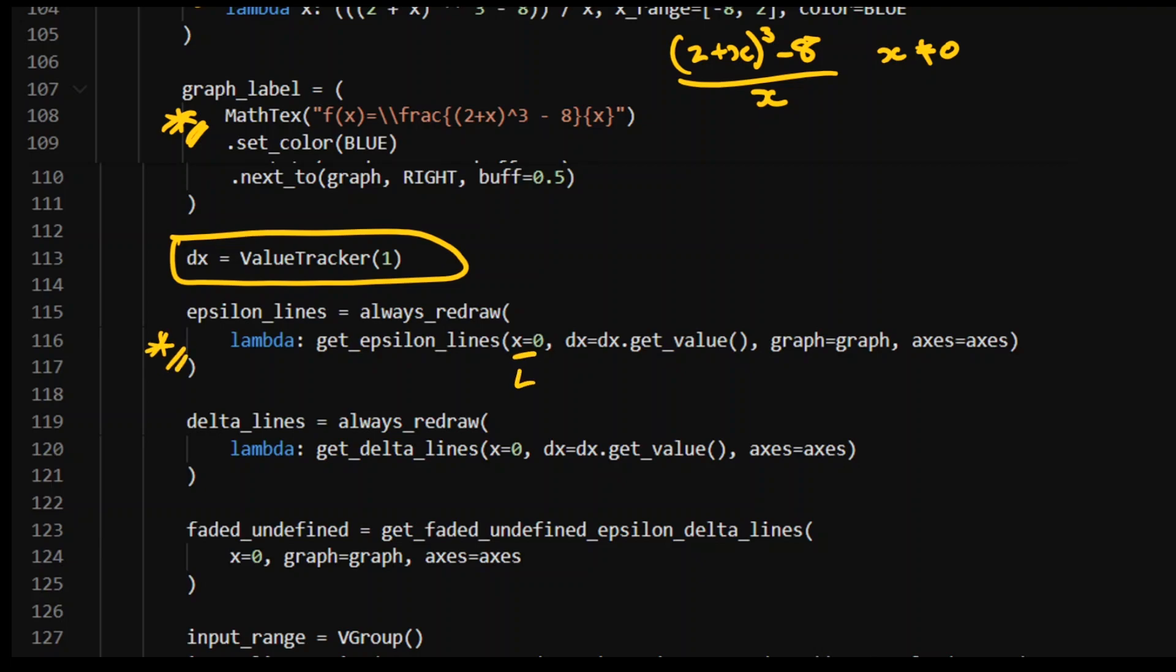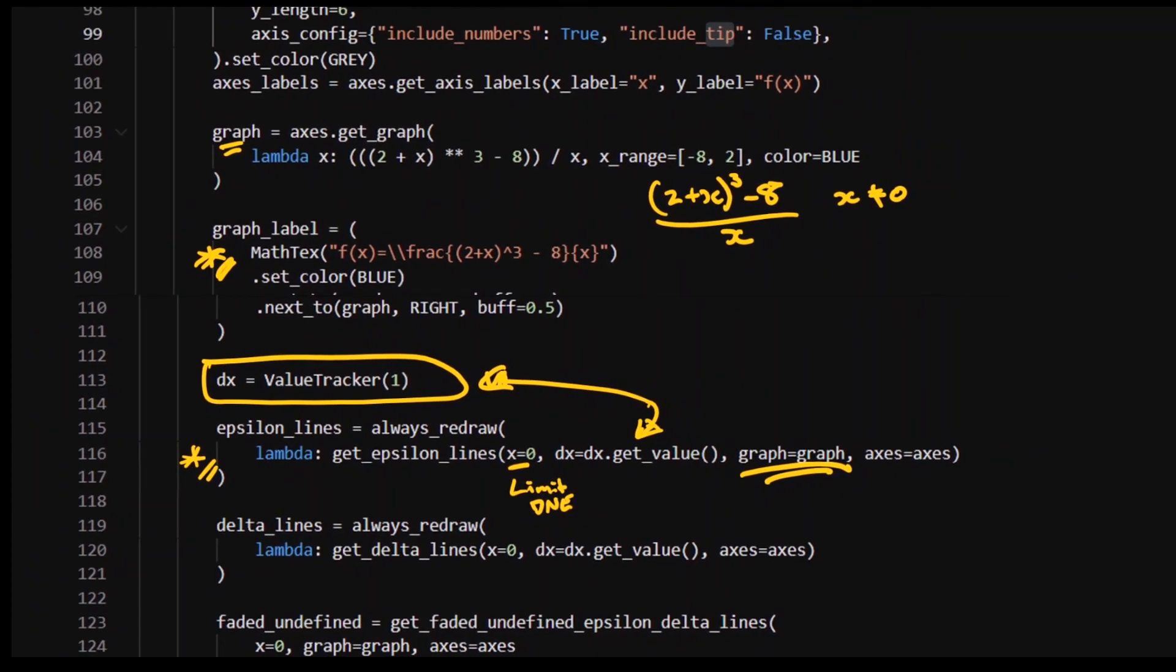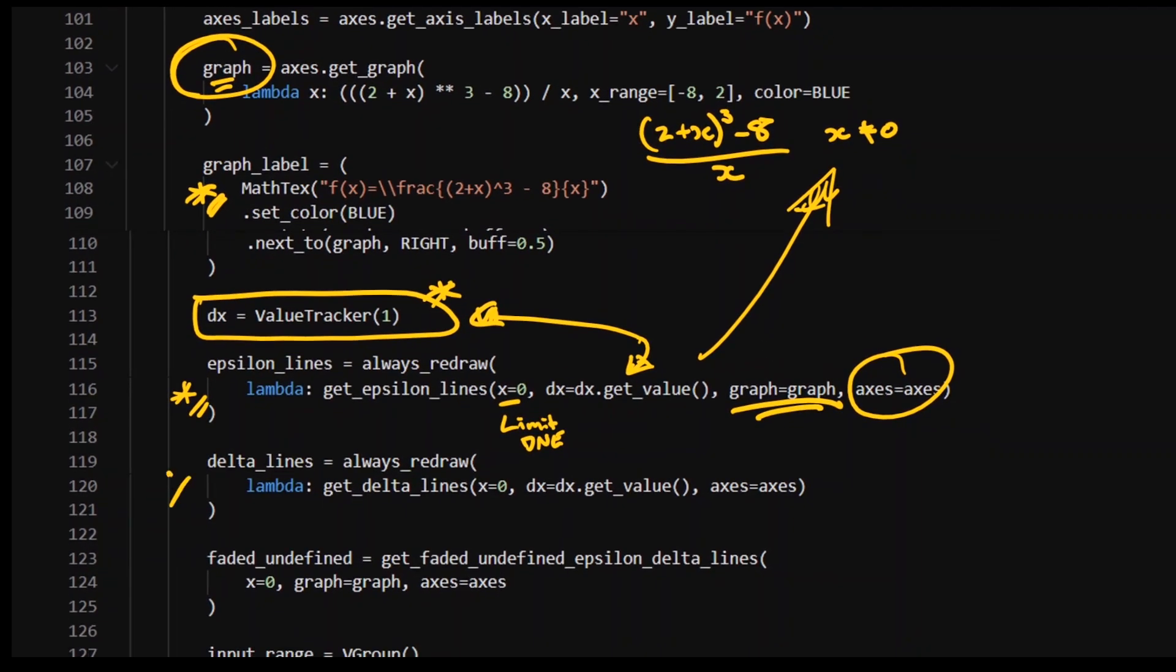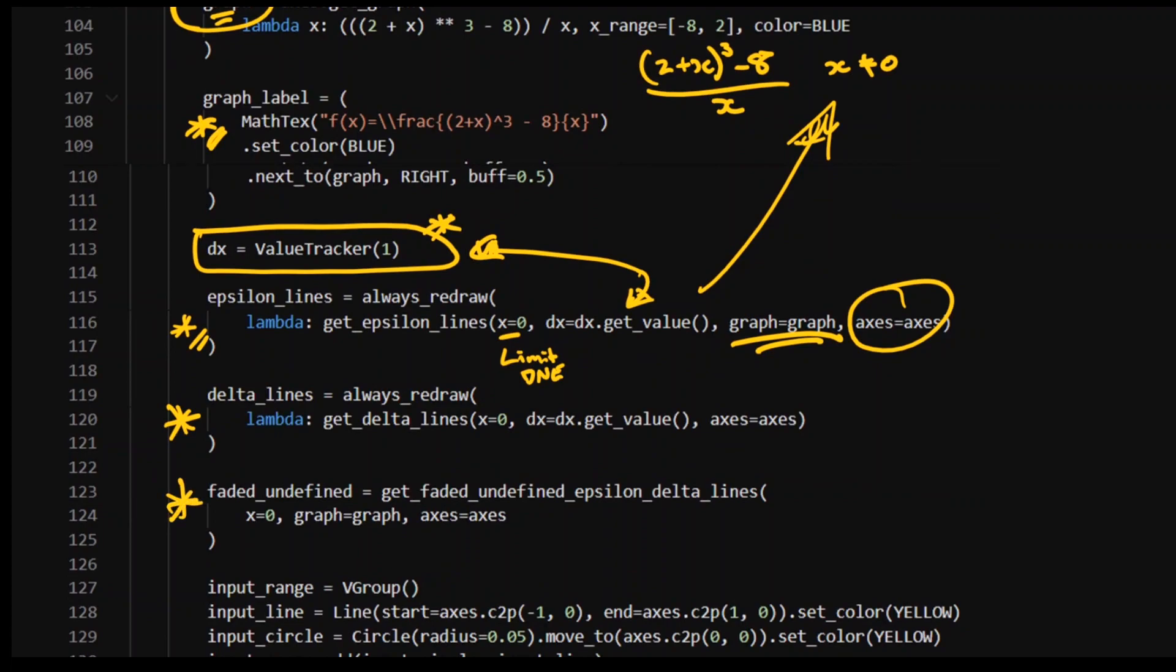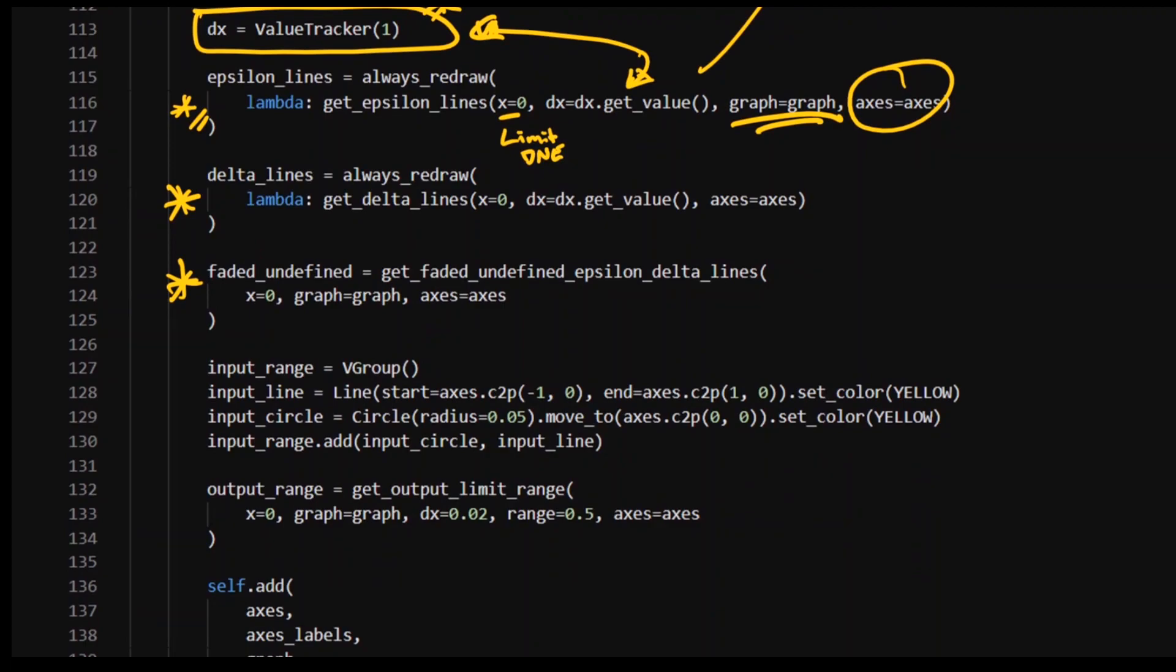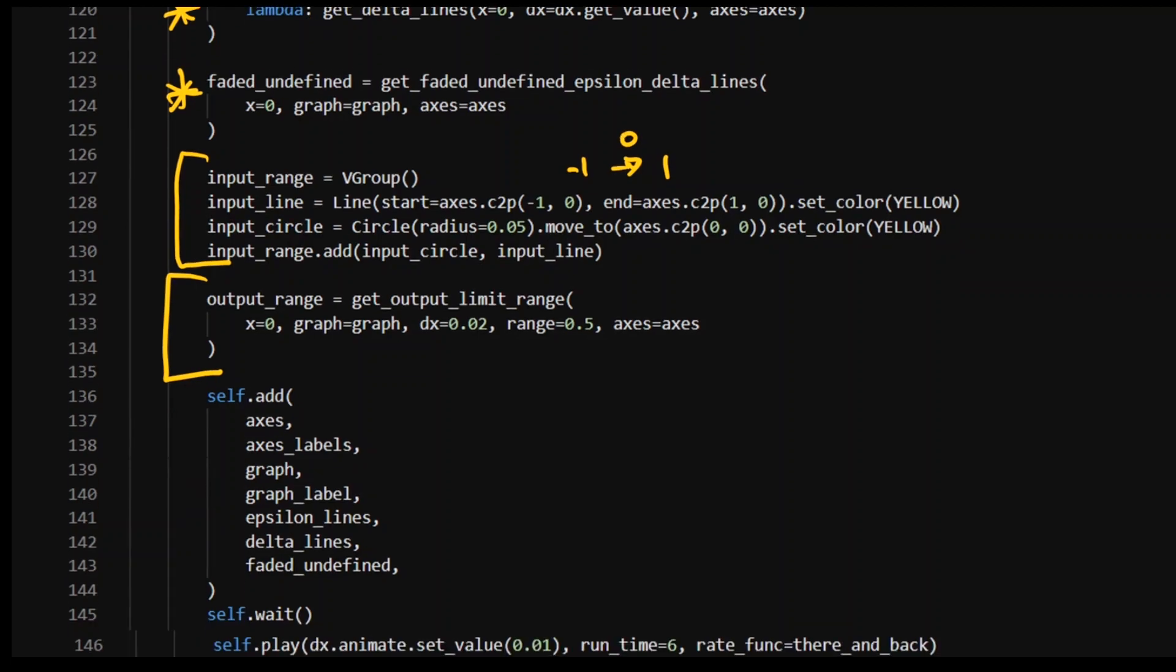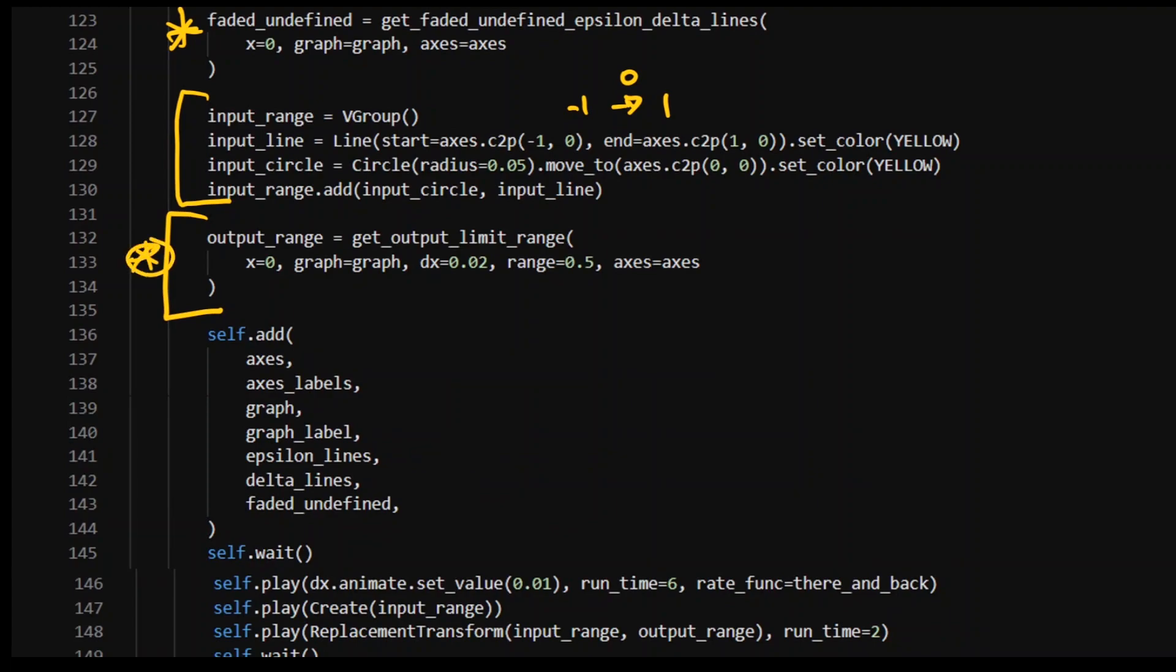I've got my epsilon lines. I'm saying x equals 0. That's where the limit does not exist. Base that dx value from the value tracker. Hit the graph, which is this guy right here. And then the axis is this guy right there. So just put it on that graph, on that axis, at the point x equals 0 because that's the point where the limit does not exist. And consider the value tracker that we've set up. Similar thing for the delta lines. Same thing for the faded lines, right? Except those don't need an update because they're not changing. And then we've just got that little effect of the input lines transformed to become the output lines. So the input line was pretty much, it was just a line going from negative 1 along to 1, along the x-axis. And we had that circle in the middle there. And then the output range is that function that we had defined up above.